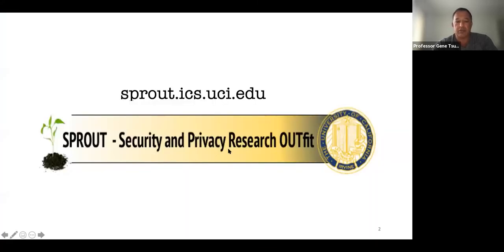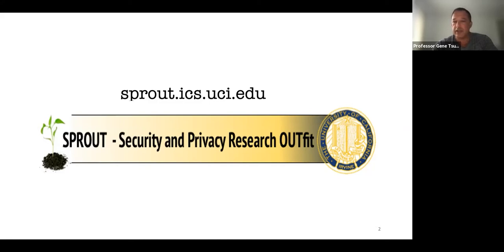The home of the UCI authors of this work is SPROUT, my research group and lab. If you go there you can get an idea of the kind of landscape we cover: security, privacy, crypto, applied cryptography. There's not one focus but many different research efforts in all kinds of directions, all under the general umbrella of security and privacy.